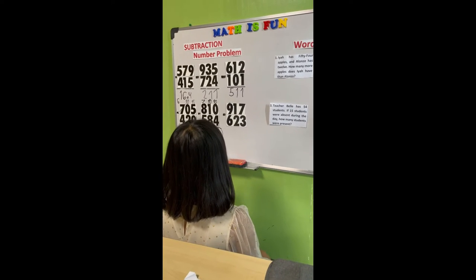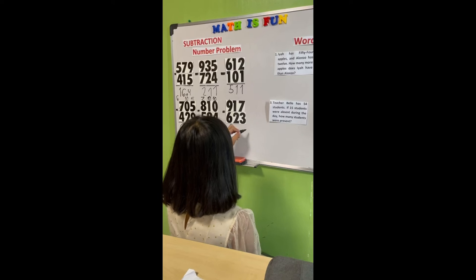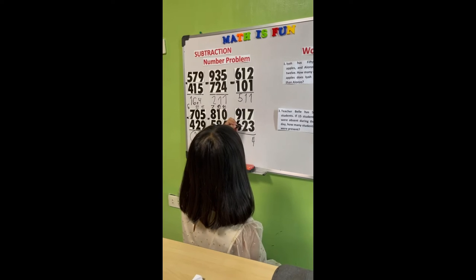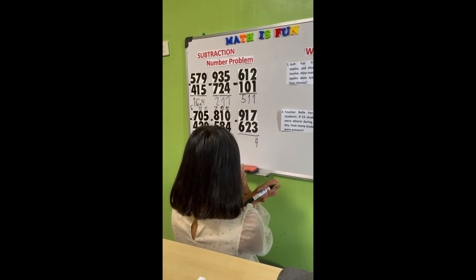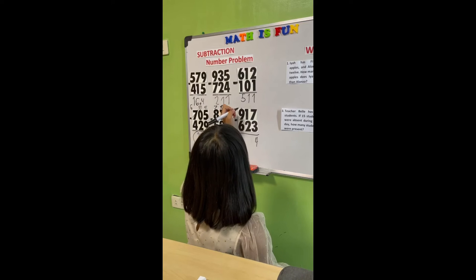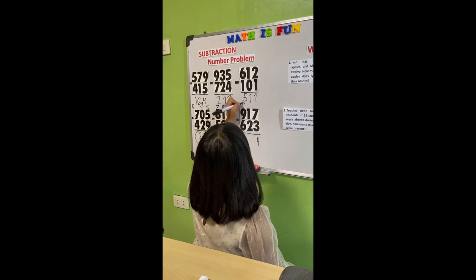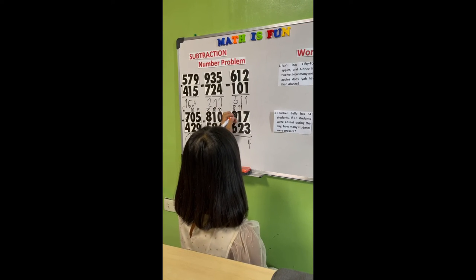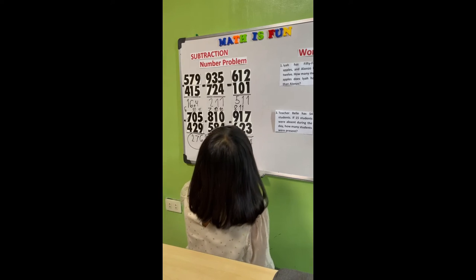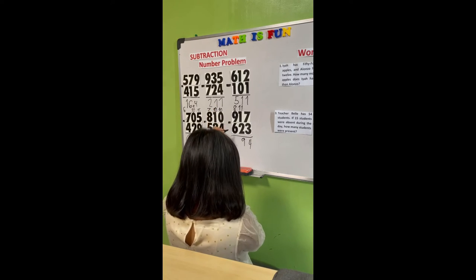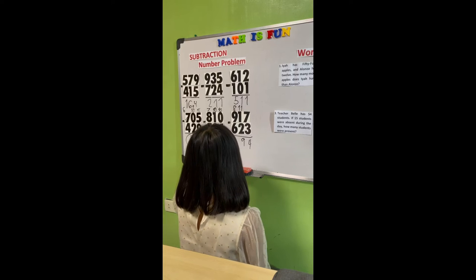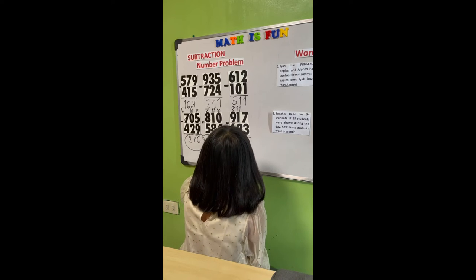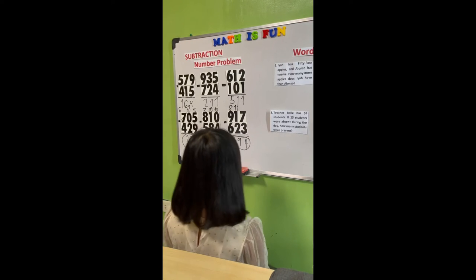917 minus 623. 7 minus 3 equals 4. 1 minus 2 cannot be, so we will borrow from the hundreds. The hundreds become 8, and the tens become 11. 11 minus 2 equals 9. 8 minus 6 equals 2. Our final answer is 294.